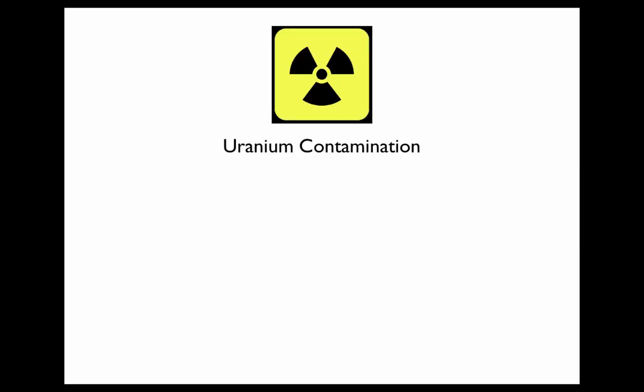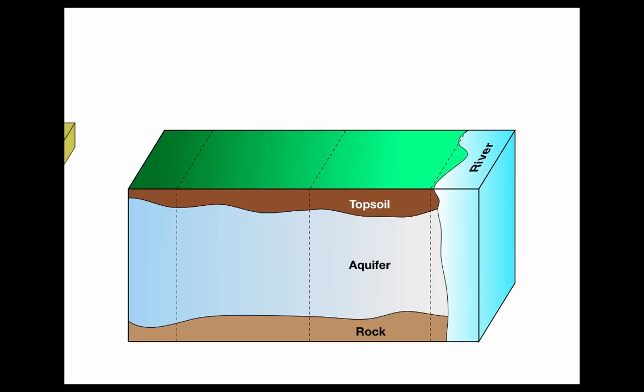Uranium contamination is a serious problem across many sites in both North America and around the world. Uranium seeps through the topsoil and enters the aquifer as Uranium-6. In the soluble form, uranium is carried by groundwater towards the river stream and eventually contaminates it.